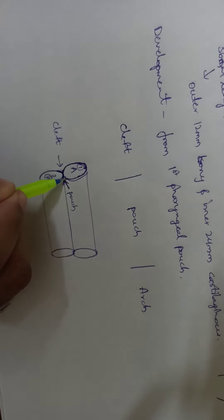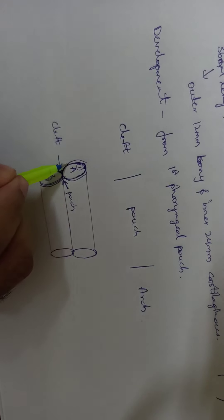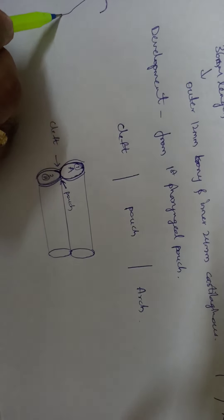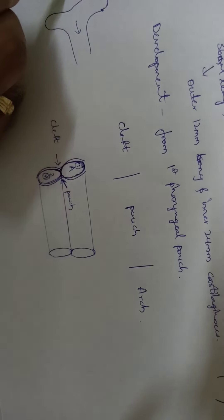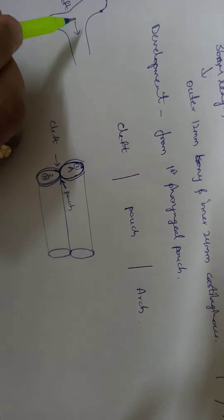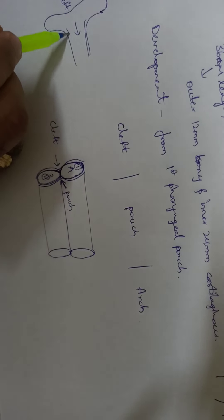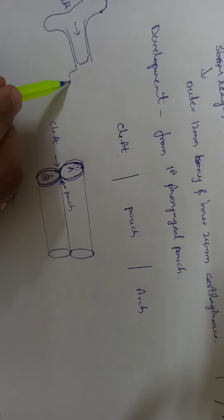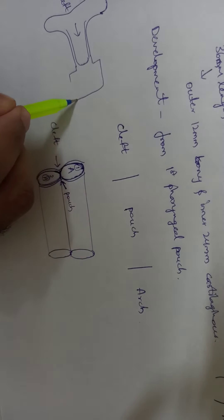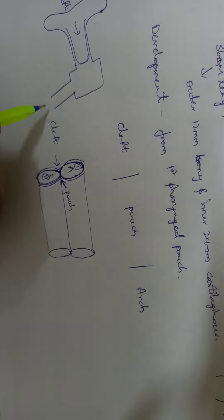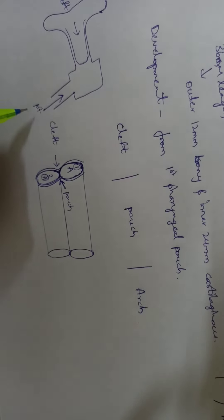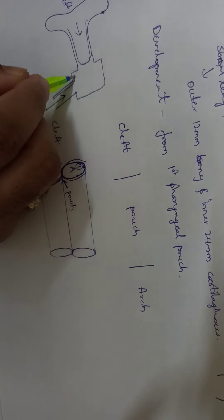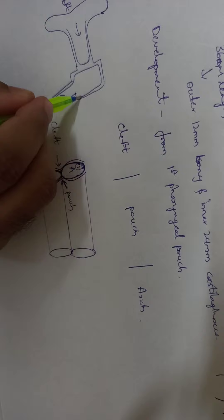Inside there will be lining of the endoderm, and outside there will be lining of the ectoderm. Your external auditory canal develops from the first cleft, and that is why it is lined by ectoderm. The middle ear and Eustachian tube develop from the first pharyngeal pouch, and that is why they are formed by the inner endodermal mucosal lining.